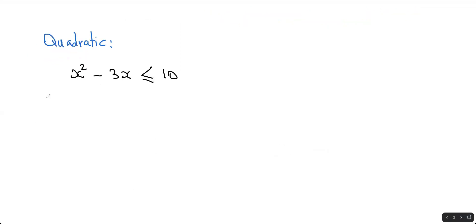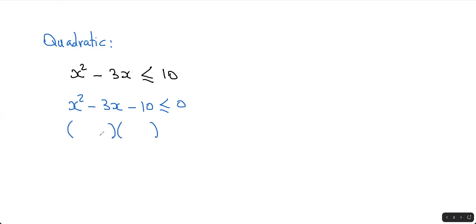Now let's go to the second one. The best way to do this is move the 10 to the other side, so you'll have x squared minus 3x minus 10. When you move the 10 to the other side, it becomes negative — it's less than or equal to 0. At this stage you want to factor this. So you'll have x minus 5 times x plus 2: two numbers multiply to give you negative 10 and add to give you negative 3. These are the factors, and that's less than or equal to 0.